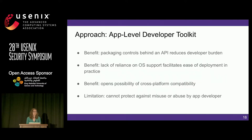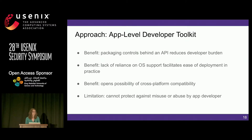Our approach to achieving this goal is to build an application-level developer toolkit. By packaging controls behind an API, we can reduce the developer burden for the same reasons that an API is usually a good idea. By not relying on OS support, we facilitate ease of deployment in practice, make it easy to share the toolkit through standard channels, and open the possibility of cross-platform compatibility. This does mean we can't protect against misuse by a malicious application developer, but we consider this a reasonable trade-off, and note that OS support is necessary but not sufficient to protect against malicious app developers at any rate.